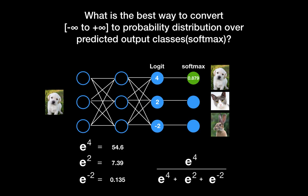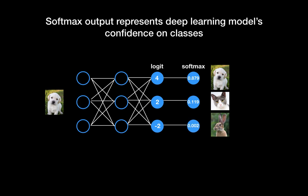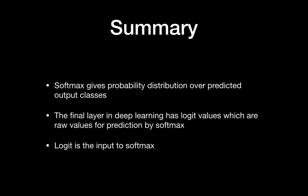The softmax output for the dog is 0.879, for the cat is 0.119, and for the rabbit is 0.002. Summing these values gives exactly 1, so we can now say this is the probability distribution for each class over all predicted classes. Softmax output represents the deep learning model's confidence on each class. The key takeaway: softmax gives the probability distribution of predicted output classes.